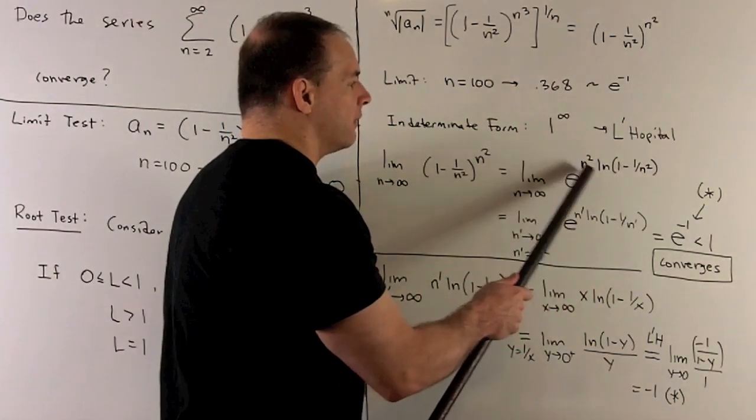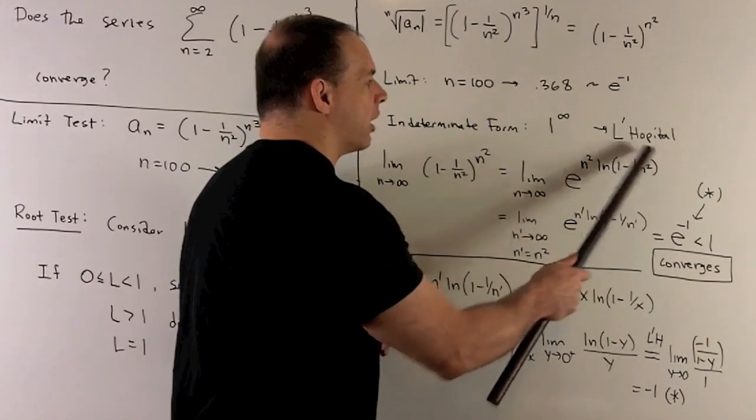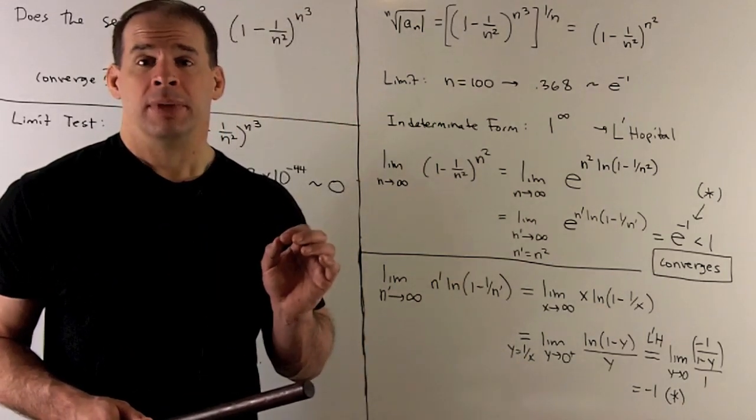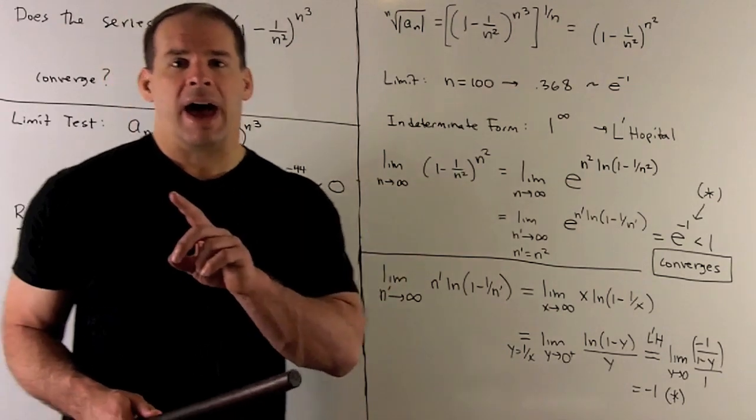Now, next step. Note here, the only variable I have is an n². So instead of considering this with respect to n², I could sub out those n²s with an n prime. Then we just consider this limit as n prime goes to infinity.